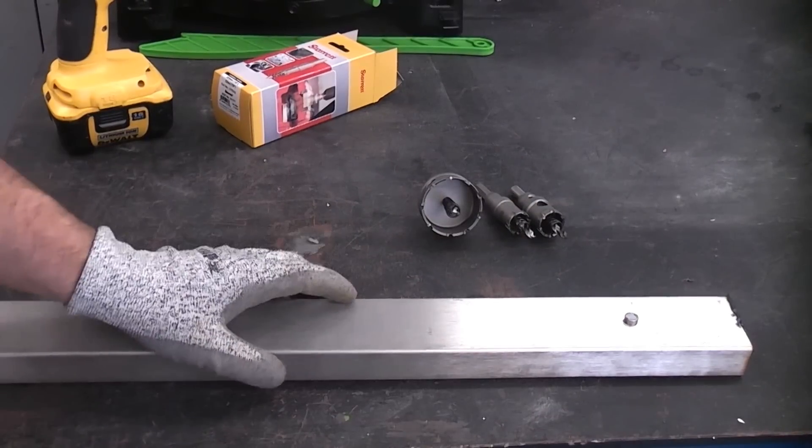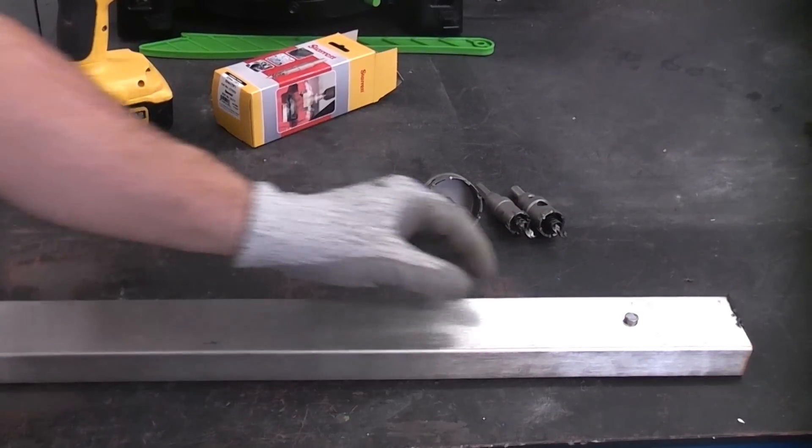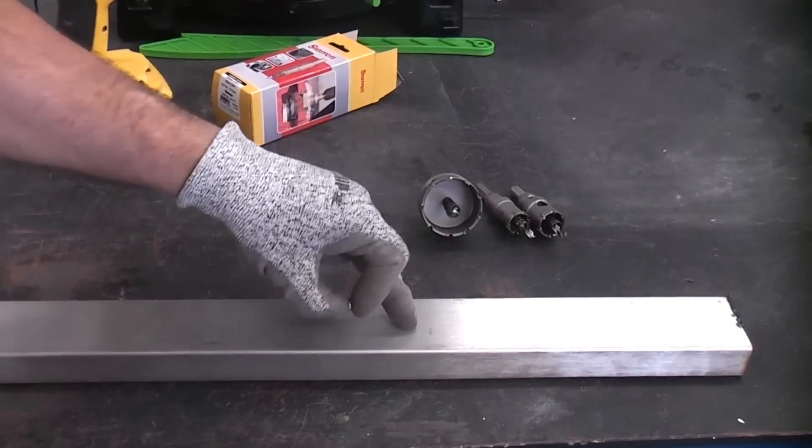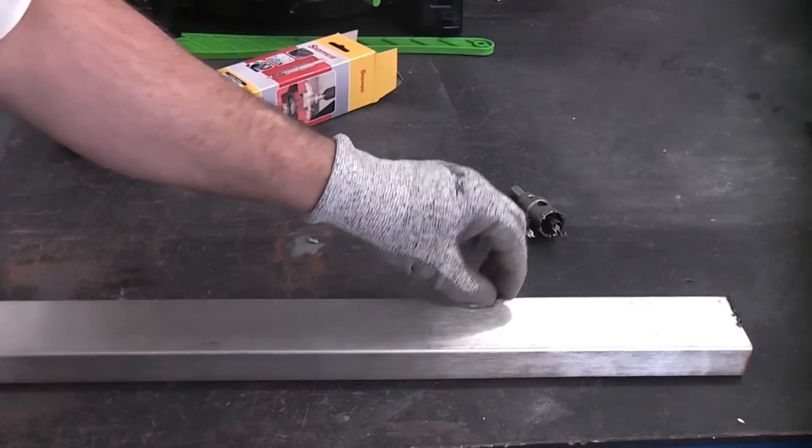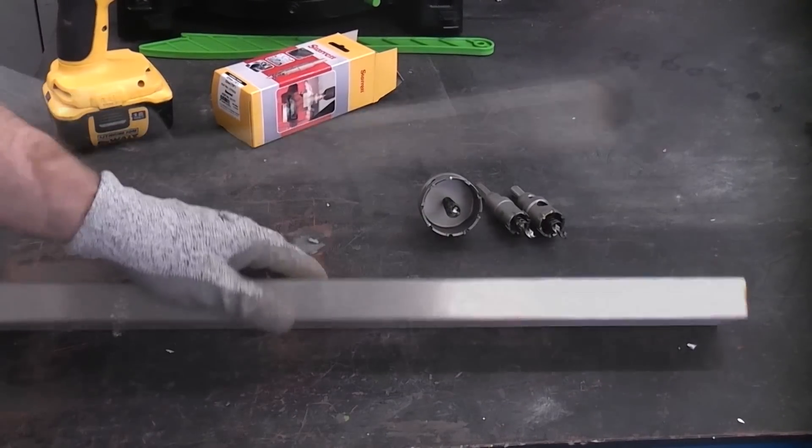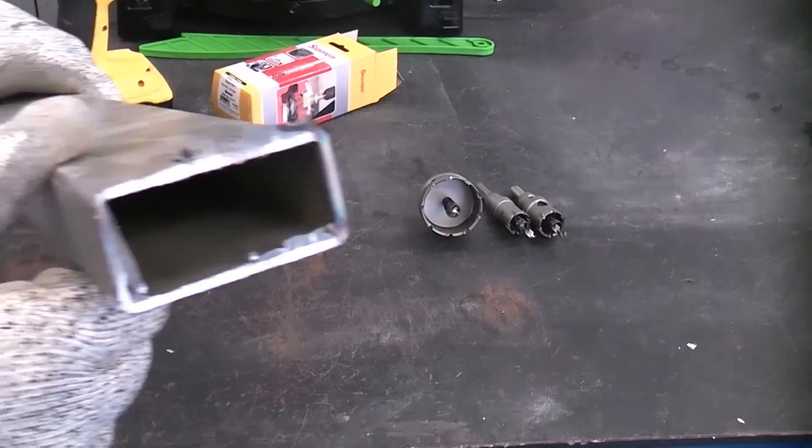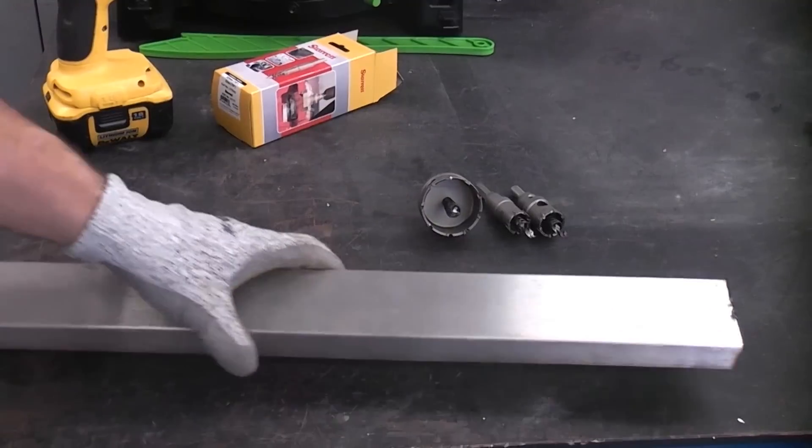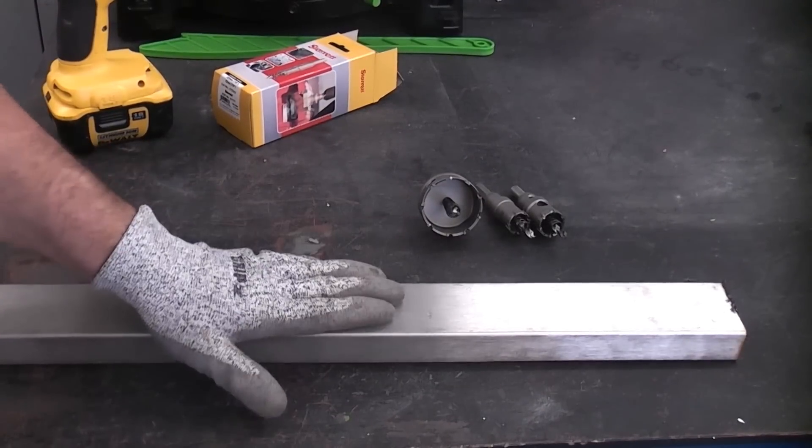Drilling holes in stainless steel can be incredibly difficult because it can work hard as you're drilling it. This is 316 stainless which is non-magnetic, one of the hardest stainless steels that you can actually drill. It's not very thick, probably only a couple of millimeters wall thickness, but it is still incredibly difficult to drill.